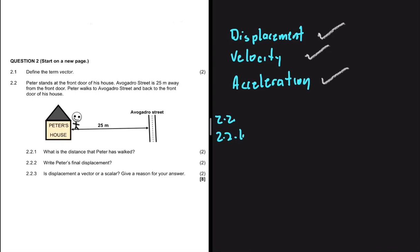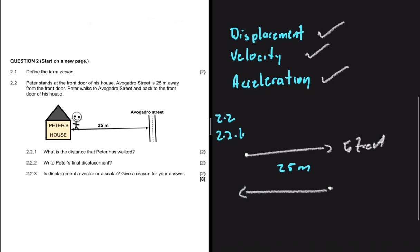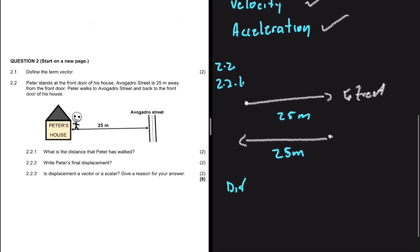Distance is defined as the total length of the path taken from one point to another. In our scenario, Peter goes from the house to Avogadro Street — that is 25 meters. Then he goes from the street back to the house — that is another 25 meters. So the total distance Peter has traveled equals 25 meters plus 25 meters.